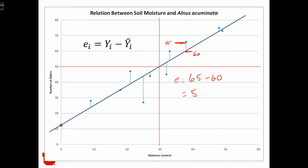The residual squared — so this is a particular residual ei — the residual squared is equal to 5 squared, which equals 25.